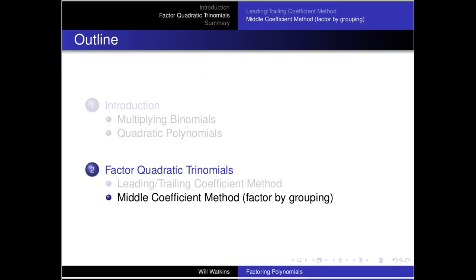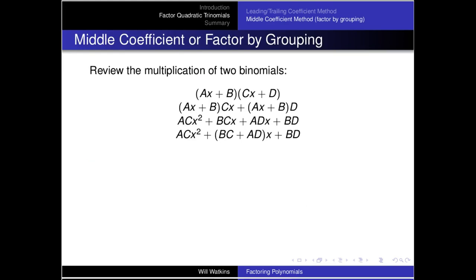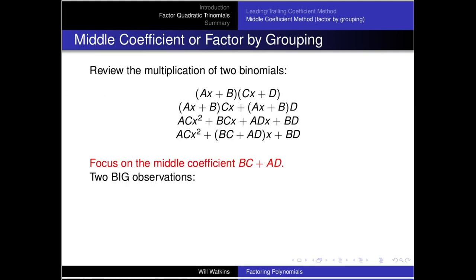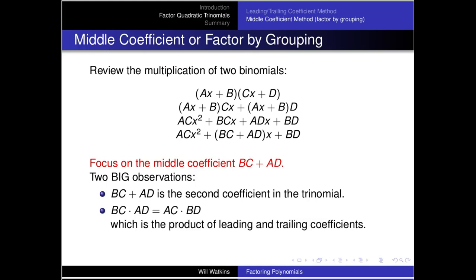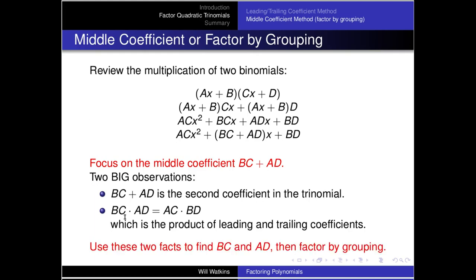The next method could be called the middle coefficient method, often called factor by grouping. The key idea focuses on the middle term. Notice that bc + ad — the sum — is the second coefficient of the trinomial. And the product of bc times ad is the same as the first coefficient times the last coefficient. That's an important observation.